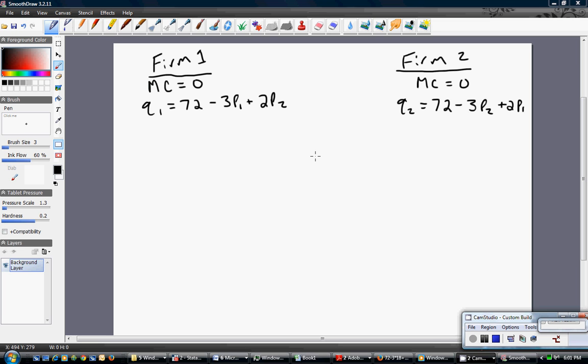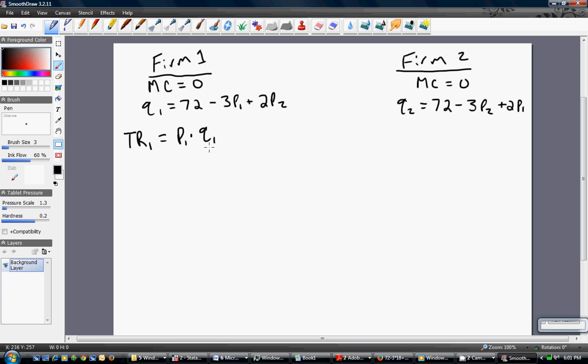So this can be a profit maximization problem, and so we can rely on the marginal revenue equals marginal cost approach. Let's get started here with firm one. Firm one's total revenue is going to be firm one's price times firm one's output. For Q subscript one, I'm just substituting in firm one's demand equation. After multiplying through by firm one's price, we're left with the following total revenue equation.